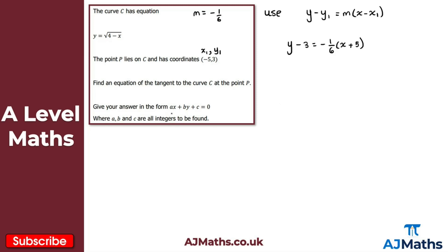We need the answer in the form ax + by + c = 0 where a, b, c are integers. To eliminate the fraction, multiply both sides by 6: 6y − 18 = −1(x + 5), which expands to −x − 5. Moving everything to one side and setting equal to 0: adding x and 5 to both sides gives x + 6y − 13 = 0.